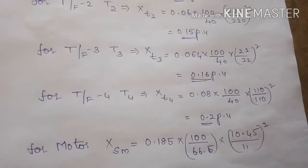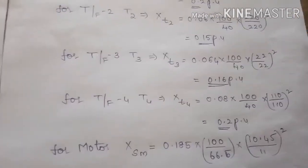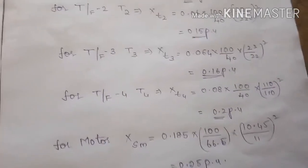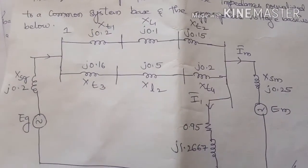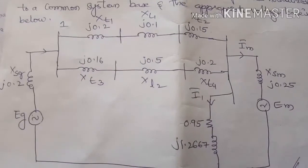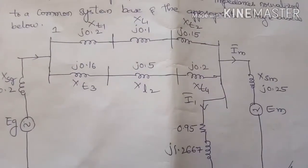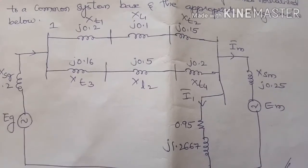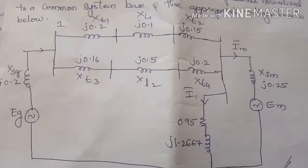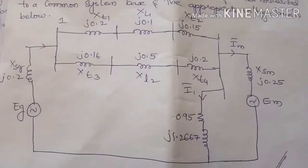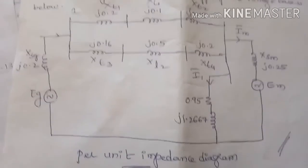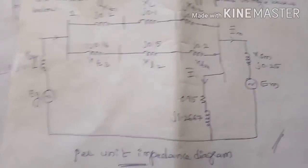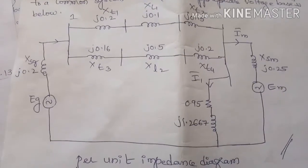Using all calculated new per unit quantities, we now draw the per unit impedance diagram. The diagram includes per unit reactances for the generator, transformers T1 through T4, transmission lines, motor, and three-phase load. Substituting all values, the final per unit impedance diagram is drawn. This is the final answer for the problem.